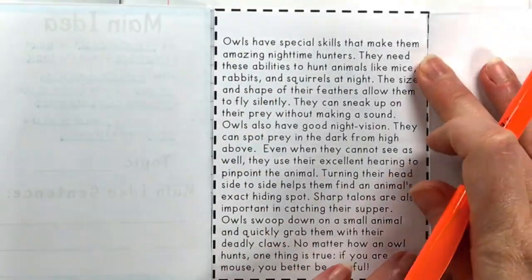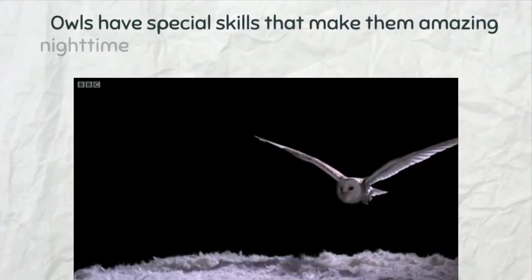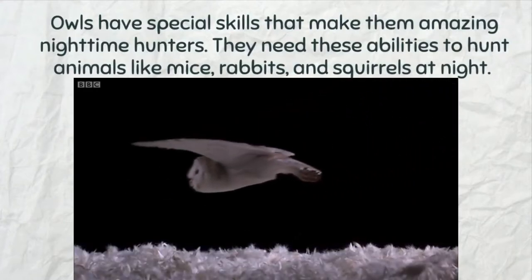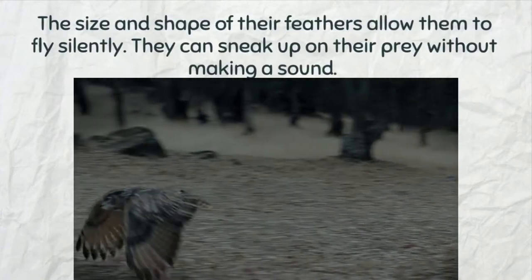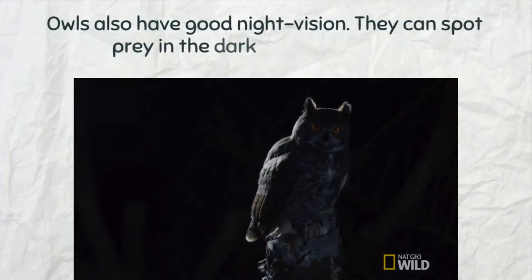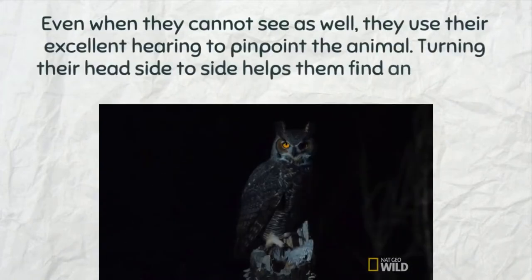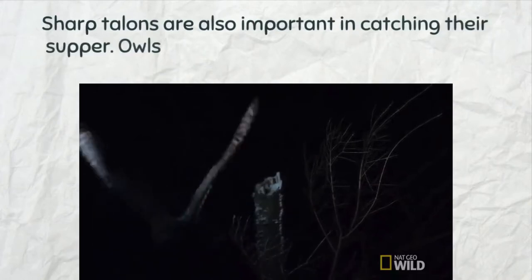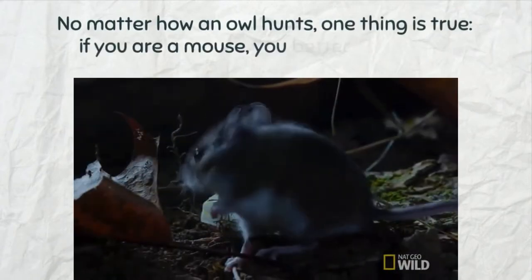Now we're going to look at this passage and figure out the topic, the main idea, and the details. Owls have special skills that make them amazing nighttime hunters. They need these abilities to hunt animals like mice, rabbits, and squirrels at night. The size and shape of their feathers allow them to fly silently. They can sneak up on their prey without making a sound. Owls also have good night vision — they can spot prey in the dark from high above. Even when they cannot see as well, they use their excellent hearing to pinpoint the animal. Turning their head side to side helps them find an animal's exact hiding spot. Sharp talons are also important in catching their supper. Owls swoop down on a small animal and quickly grab them with their deadly claws. No matter how an owl hunts, one thing is true: if you are a mouse, you better be careful.